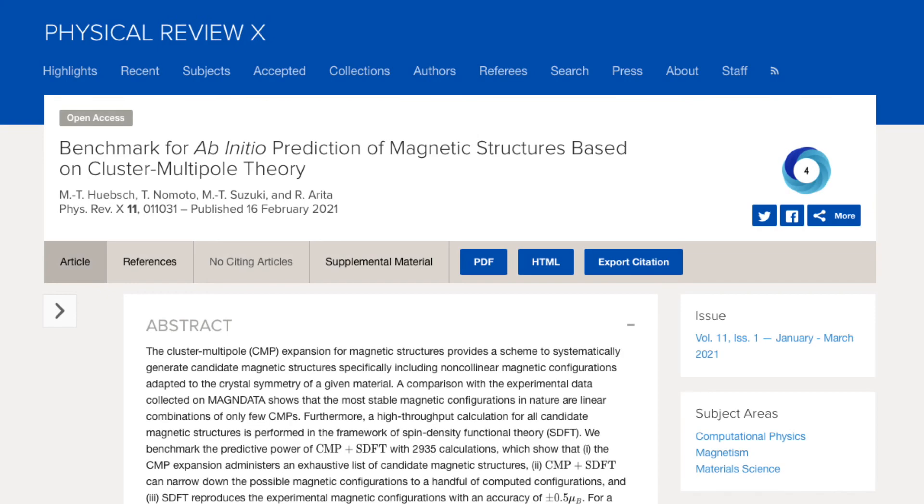The details of our benchmark are published in the latest volume of Physical Review X, but in a nutshell, we can say the following. Our approach to combine the cluster multipole theory with ab initio calculations can substantially narrow down which magnetic structure we expect to find in an experiment.